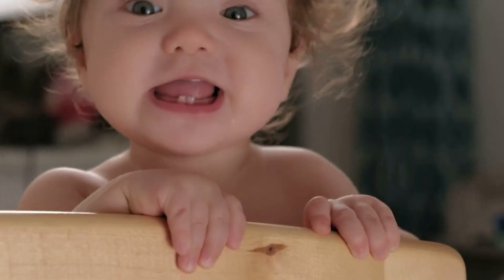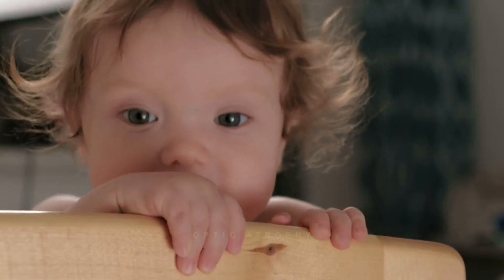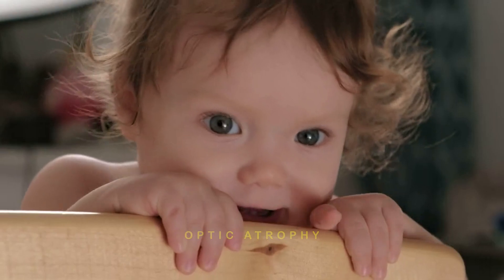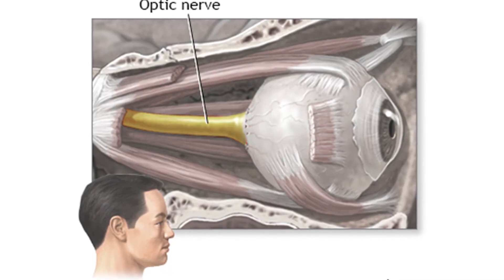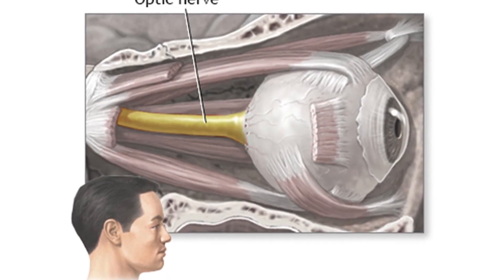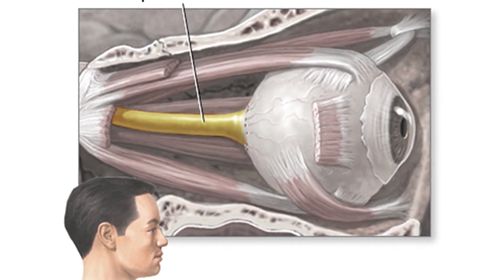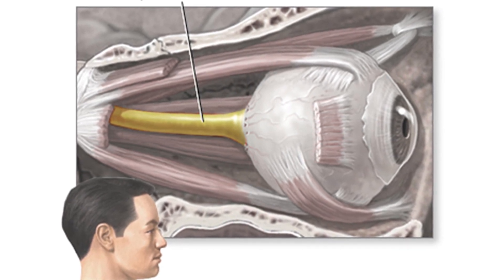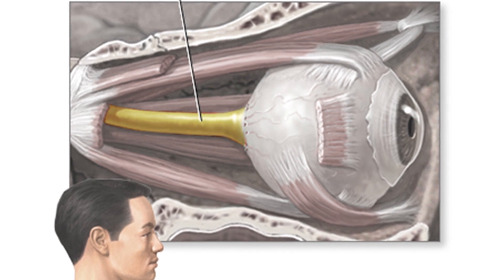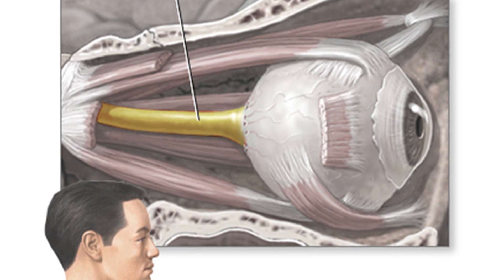Many types of eye disease can affect the eyes, including congenital cataracts, glaucoma, and optic atrophy. Optic atrophy is a condition that affects the optic nerve. Optic atrophy is not a disease, but rather a sign of a potentially more serious condition. It results from damage to the optic nerve from many different kinds of pathologies.